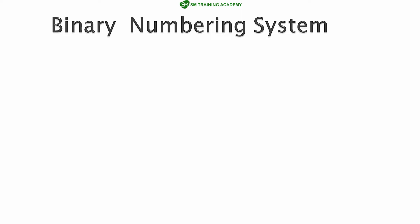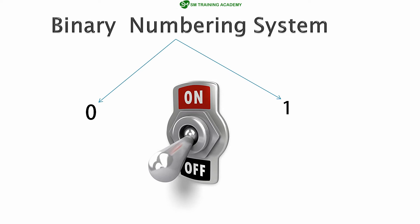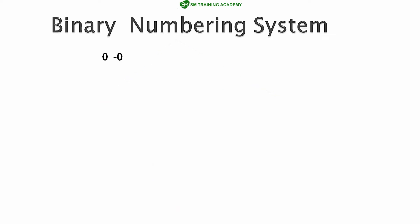The binary numbering system has majorly two states: 0 or 1. These are the only two possibilities available in binary, rather than the 10 possibilities in the decimal numbering system. A very good example for the binary numbering system is a switch, which has only two states: on or off, high or low, 1 or 0.